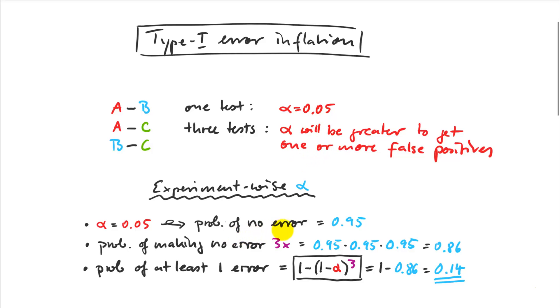The way you calculate this is actually quite clever. Instead of calculating the probability of making an error, you actually calculate the probability of making no errors. If I do one comparison, my probability of making no errors is 0.95. Then I can multiply those for three comparisons.